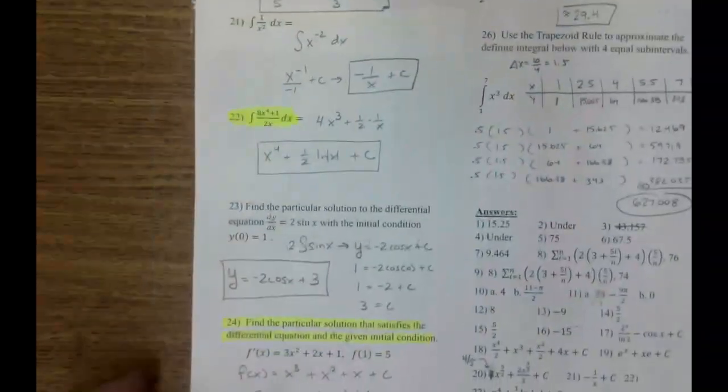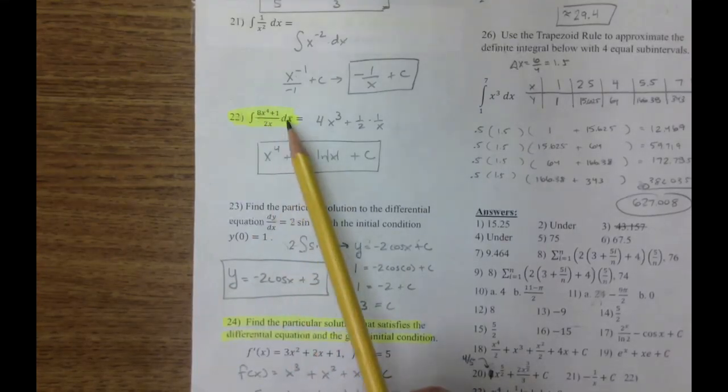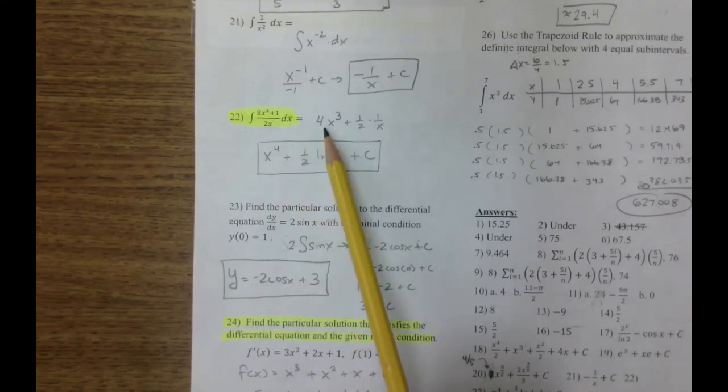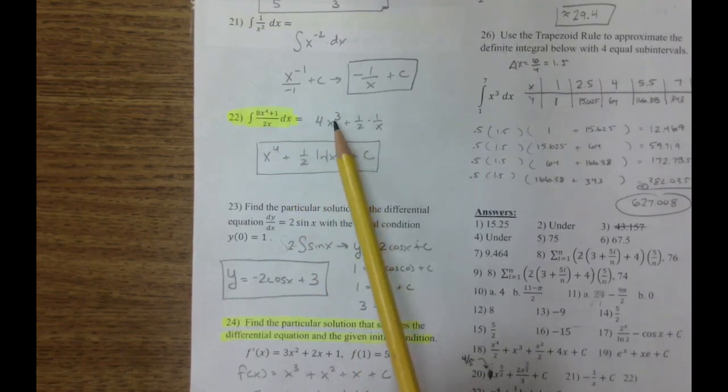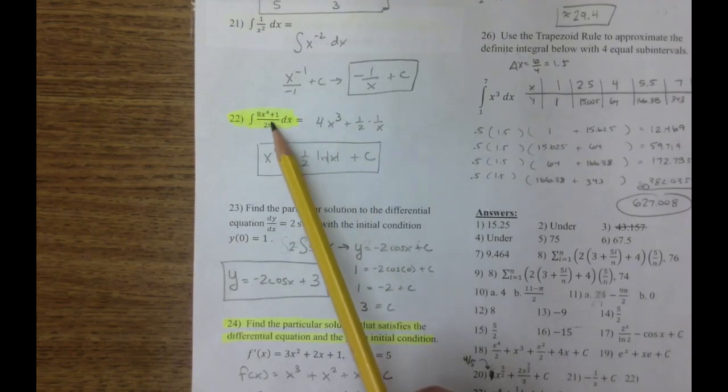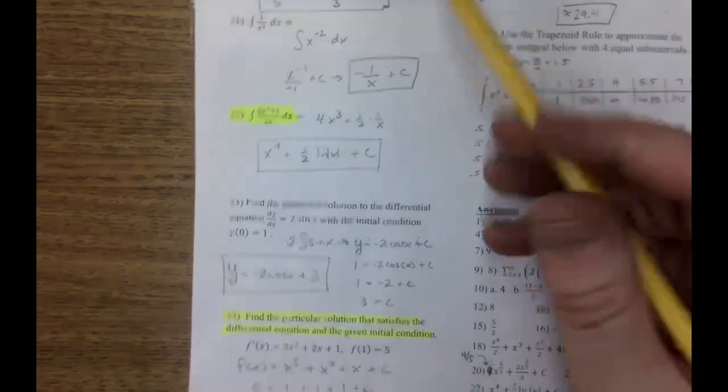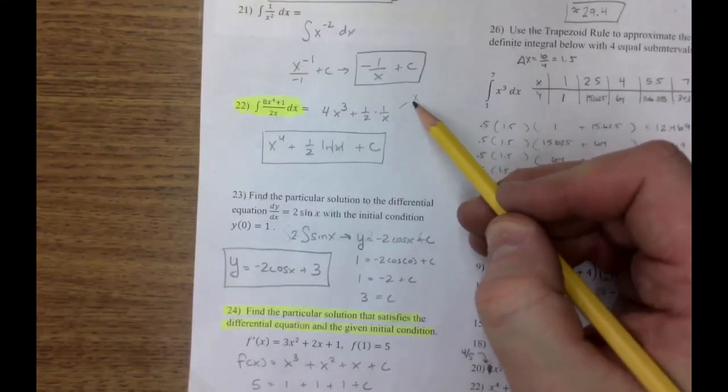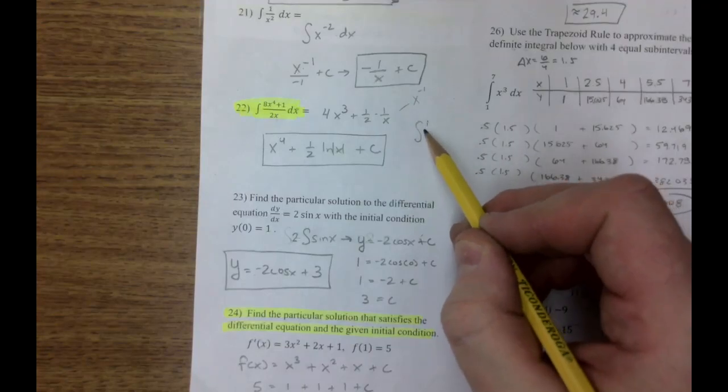All right. Two more things you need to know. Well, you need to know how to integrate stuff. And we take this form and we simplify it. And eight divided by two is four. X to the fourth over X is just X cubed. And this one is one-half with an X, one over X still. Now I could write this as X to the negative one. However, I know this rule. If you integrate one over X, you get LN of X.